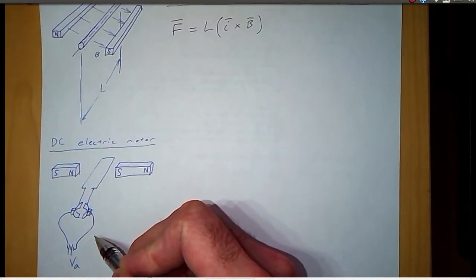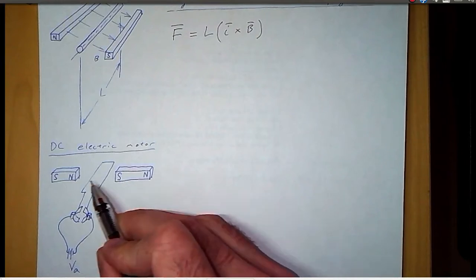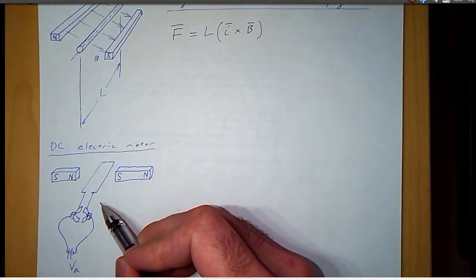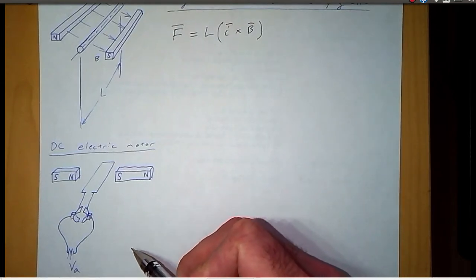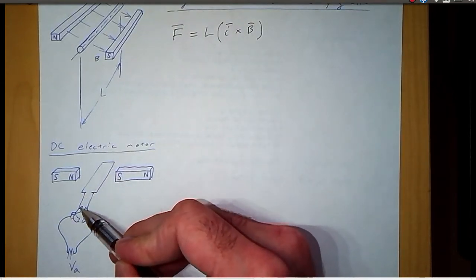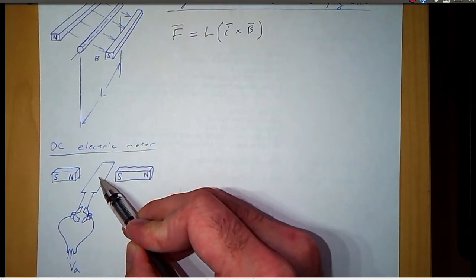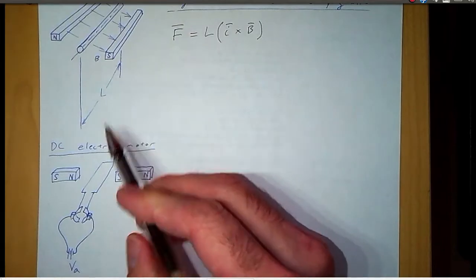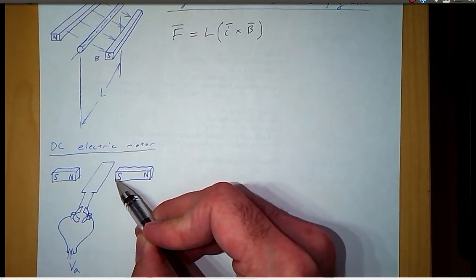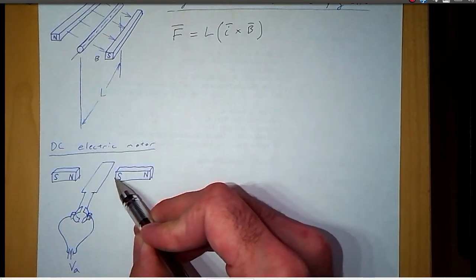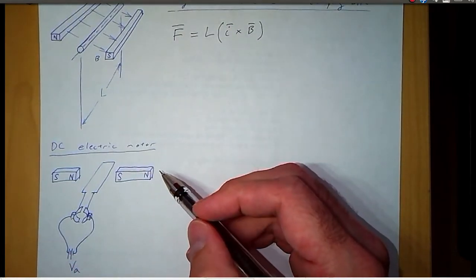Another question about direction: using what we learned from the previous figure, the current goes like this and the magnetic field is arranged as shown — which direction is the rotor going to turn, counterclockwise or clockwise? In this case, we have current going this way. On this side of the armature, the cross product of the current and the magnetic field — I cross B — is going to point down. And on this side, the current goes the other way, so I cross B is going to point up. So we have a force down on one side and a force up on the other, giving us a torque in the counterclockwise direction. The motor is going to rotate counterclockwise.